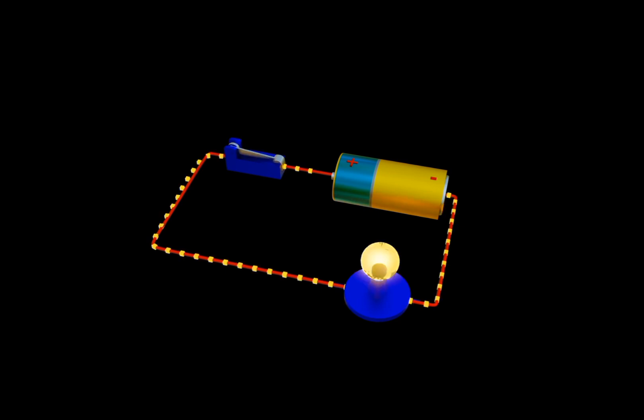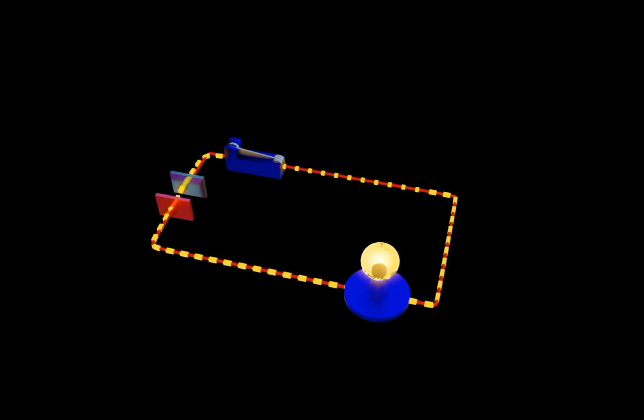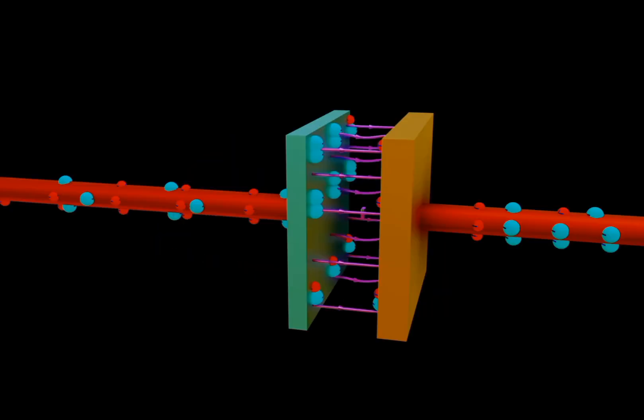Removing the battery from the circuit, the current will flow again for a few seconds. This is because the charges, which were initially stored in the capacitor, is released again.